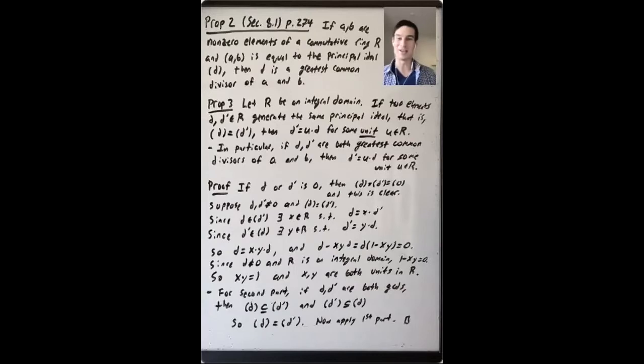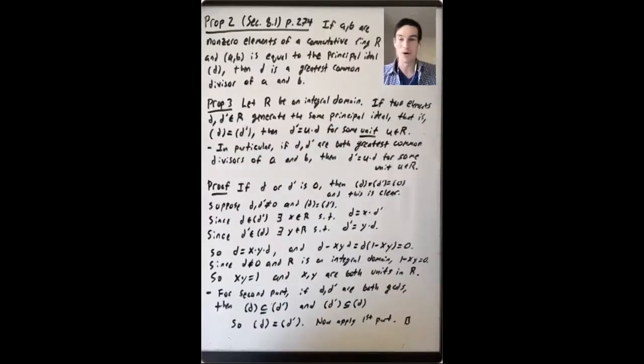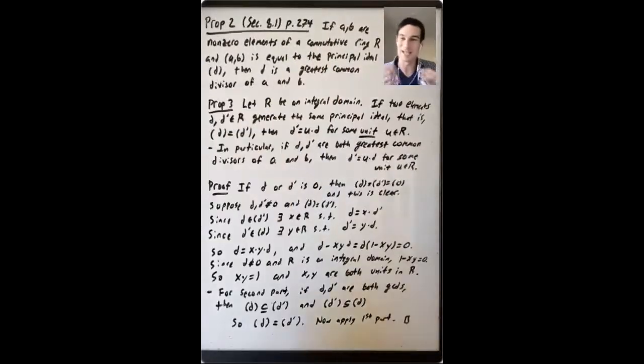Before returning to Euclidean domains, I want to say a little more in general about GCDs. First, I want to point out that we defined GCDs in terms of common divisors of two elements A and B, and then we said what this means in terms of the ideal generated by A and B. Proposition 2 of Section 8.1 on page 274, just to help orient you to where we are in Dummit and Foote, just restates this discussion as a proposition.